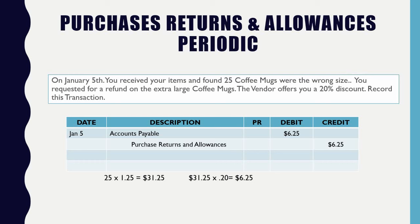Many companies have separate accounts for purchase discount, purchase returns, and purchase allowance. But returns and allowances function the same exact way — they're not the same as a purchase discount. A purchase discount is where everybody gets the same discount, like standard terms. But in this scenario, we're attempting to return, and the vendor offers us a special personal discount to keep our business — only we as a customer get it because we're trying to return merchandise.